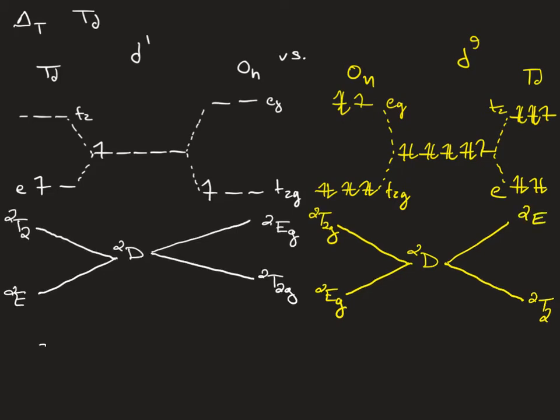If we look at a D10 minus N configuration, you might notice that there's mirroring between the OH versus the TD for these two terms. Similarly, the TD terms for the D1 is similar to the OH terms for the D9. This holds in general.